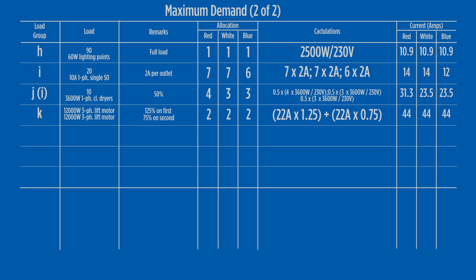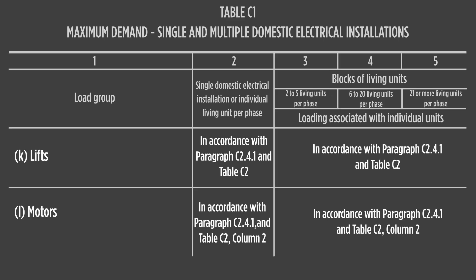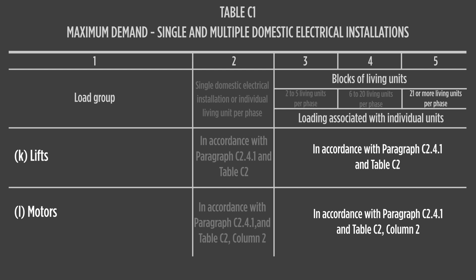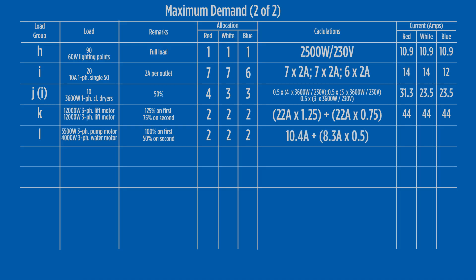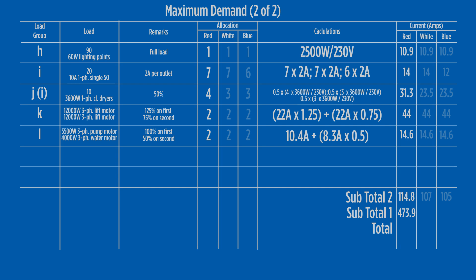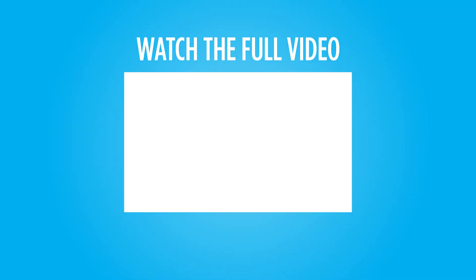The final calculation is for two three-phase motors, one at 5.5 kilowatts and the other at 4 kilowatts. For load allocation, group L in Table C1 directs us to Table C2 again. In column 2 of Table C2, full load current is applied for the first motor and 50% of full load current for the remainder. The calculation gives us 14.6 amps, with the total loading for the communal services being 114.8 amps. All that remains is to add the unit and communal service loadings together: 473.9 plus 114.8 equals 588.7 amps for the estimated maximum demand.